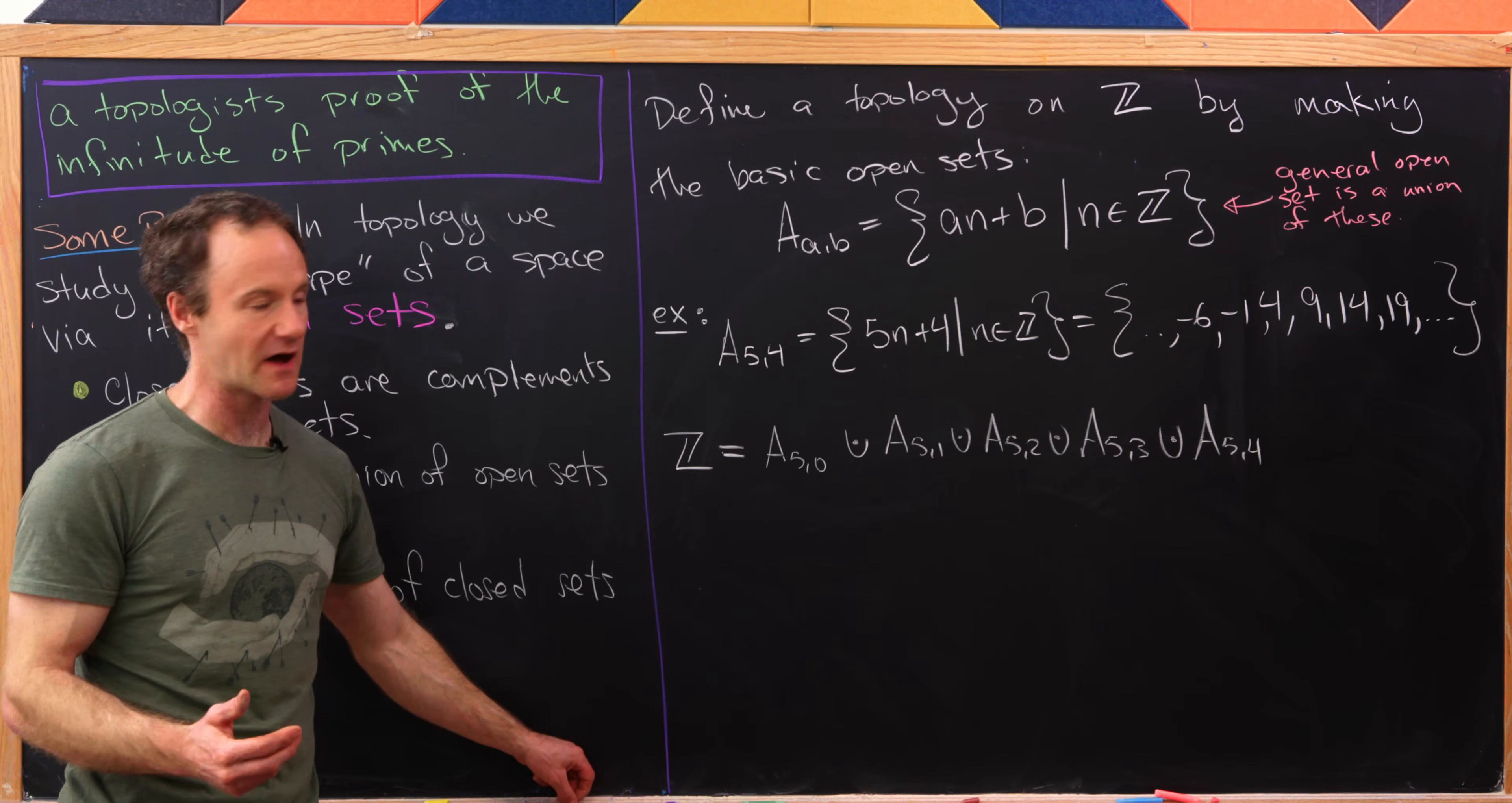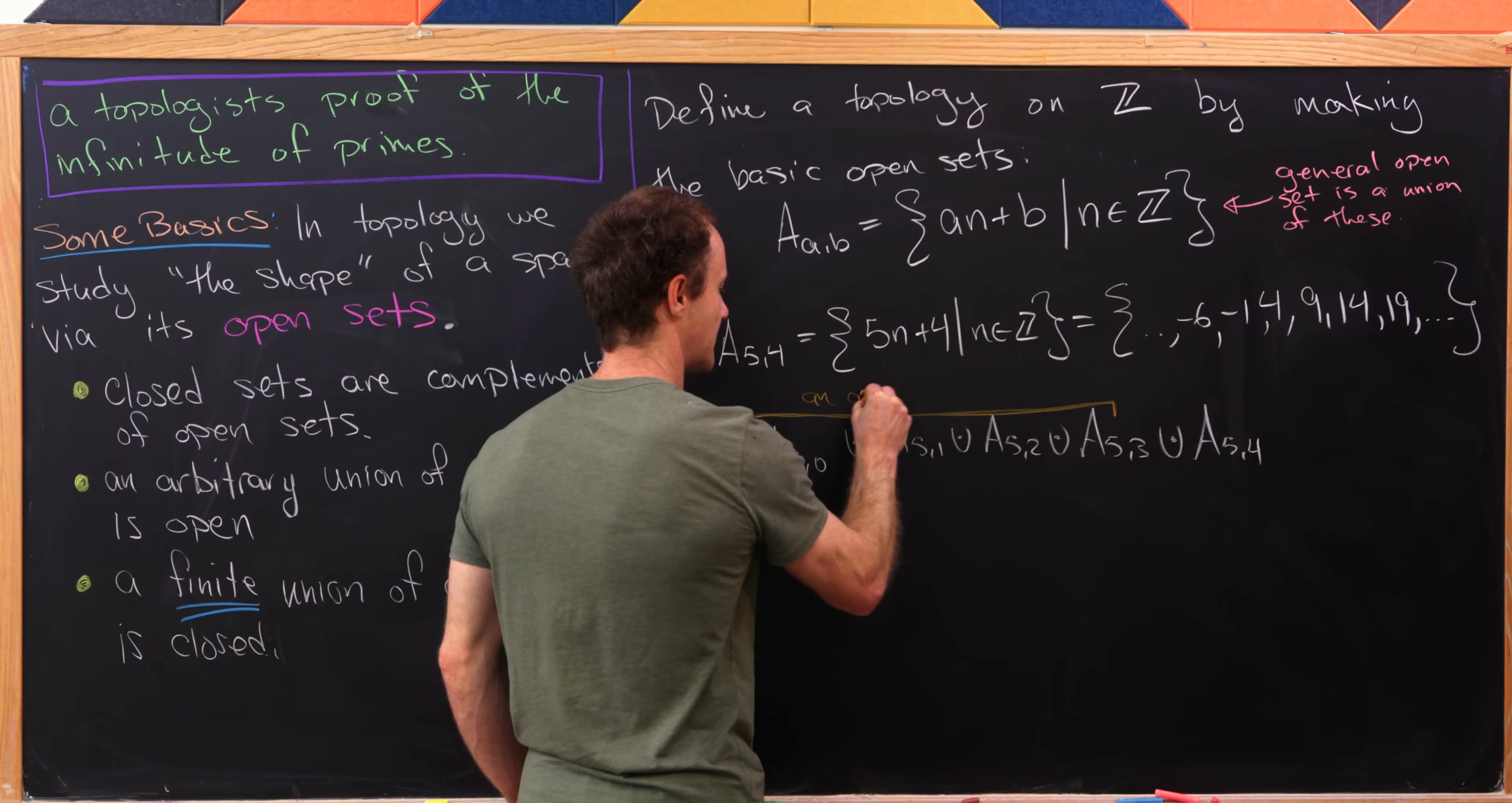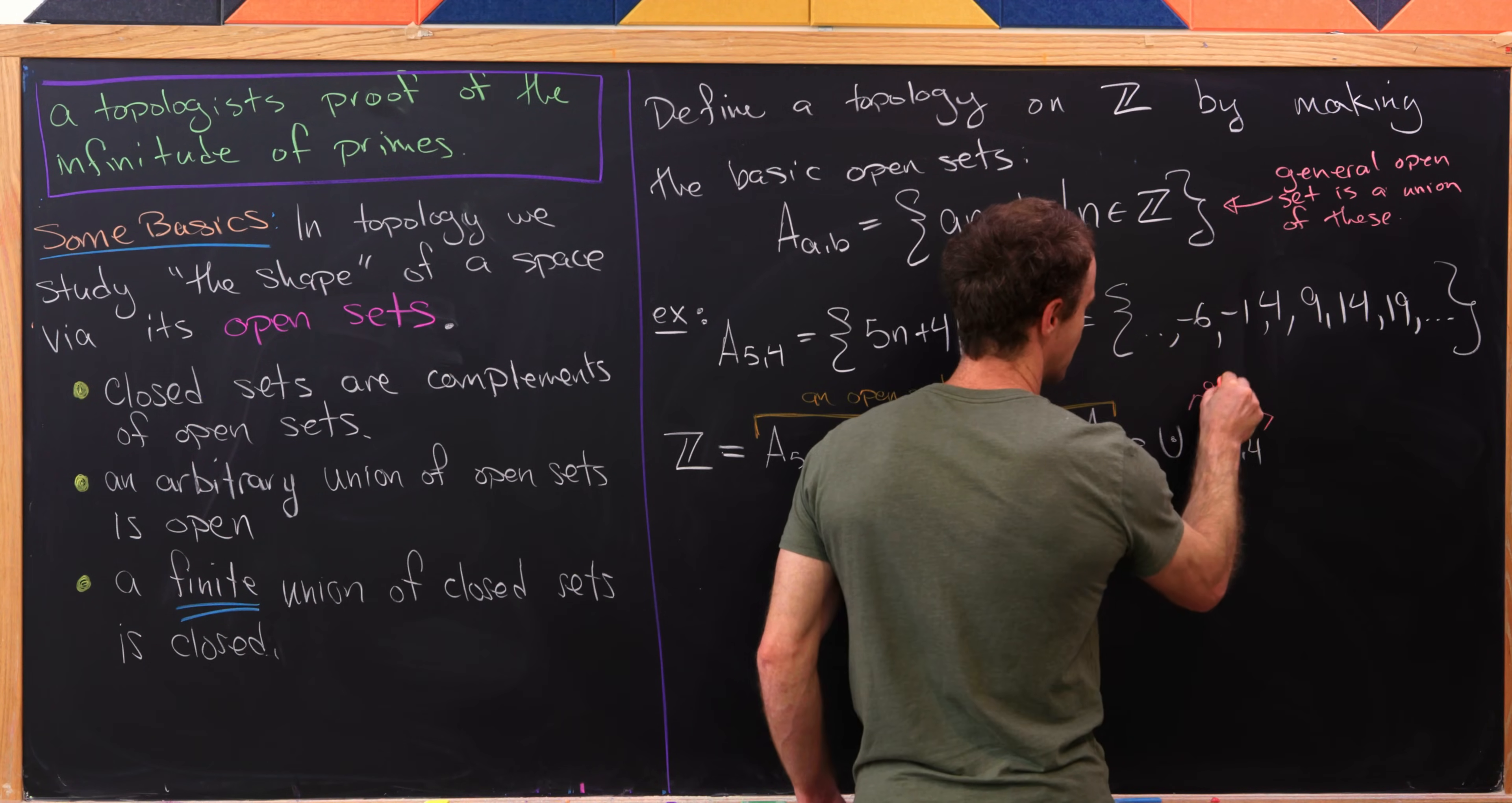And now, like I said, what's weird about this setup is one of these basic open sets is actually also a closed set. And we can see that as follows. So notice that this bit right here is most definitely an open set. That's because it is a union of four things that we called our basic open sets. So I'll call this maybe U, the canonical letter for an open set.